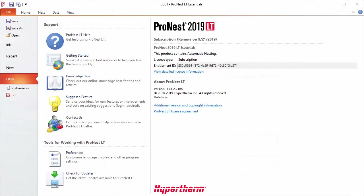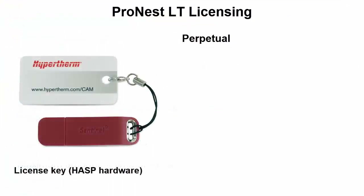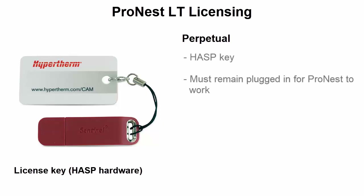Another way to authorize ProNest is using a perpetual license. If your copy of ProNest came with a removable Hasp hardware key that plugs into the USB port on your computer, you have a perpetual license. That USB key contains your license information and must remain plugged in for ProNest to work.